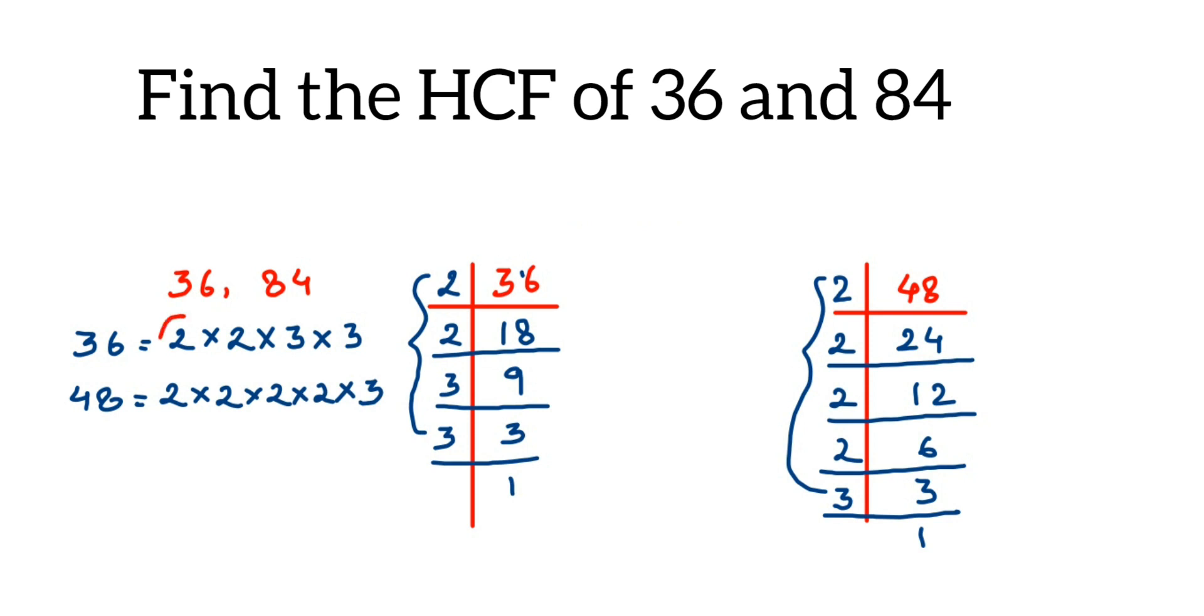Some factors are left unpaired, so just leave them like that. Now for the HCF, from each common pair you have to take one factor.